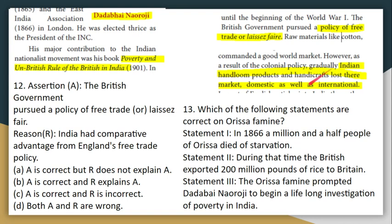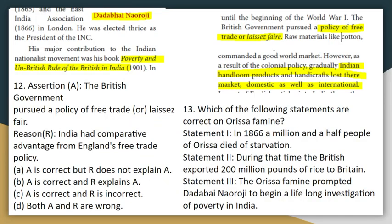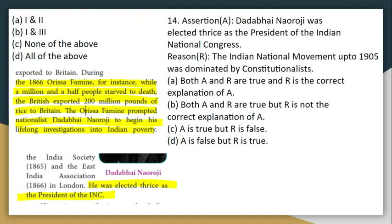Which of the following statements are correct? Statement 1: In 1866, one and a half million people starved to death. Statement 2: The British exported 200 million pounds of rice from India to Britain. Statement 3: Dadabhai Naoroji's book 'Drain of Wealth' involved a lifelong investigation into Indian poverty. All three statements are correct, so the answer is all of the above.